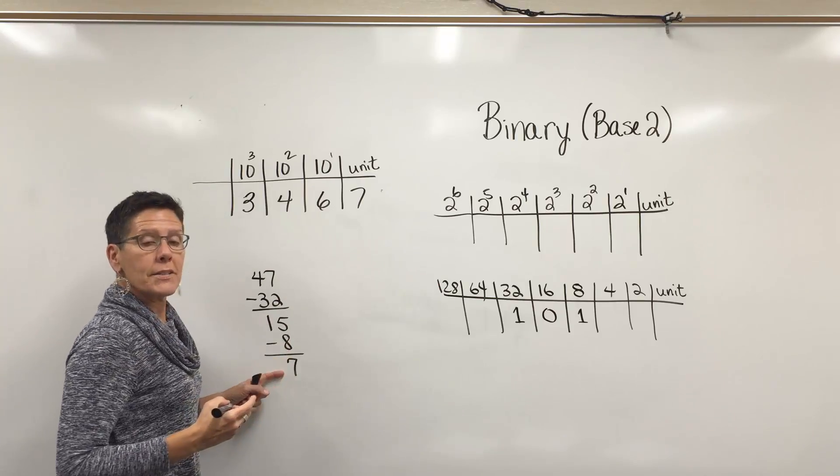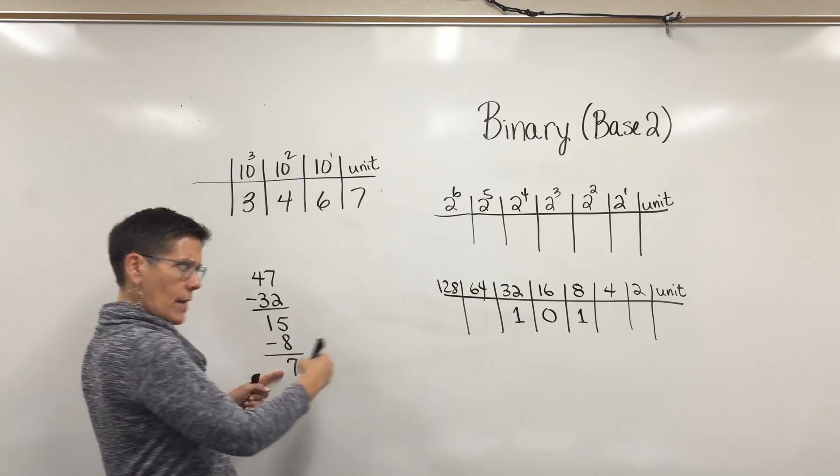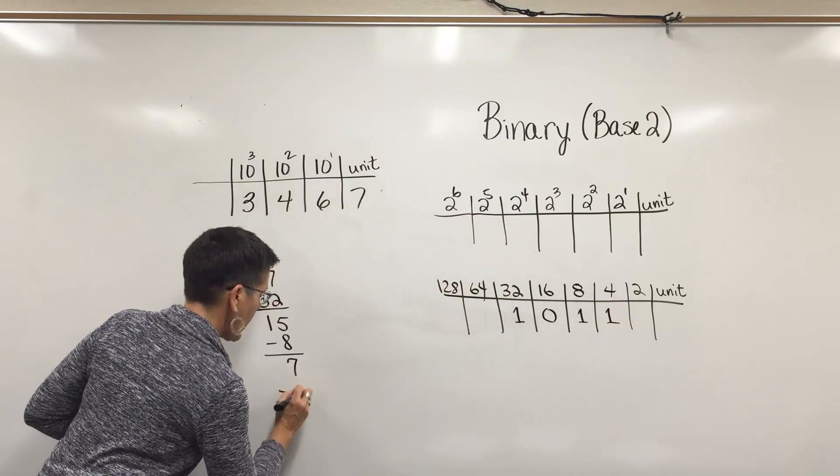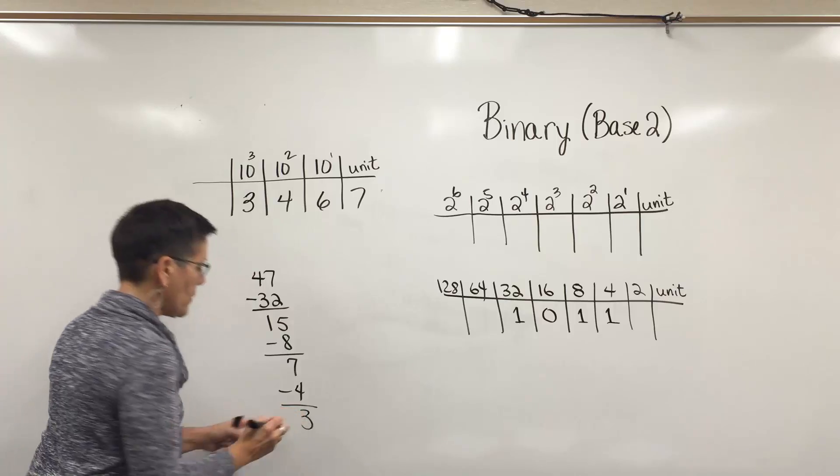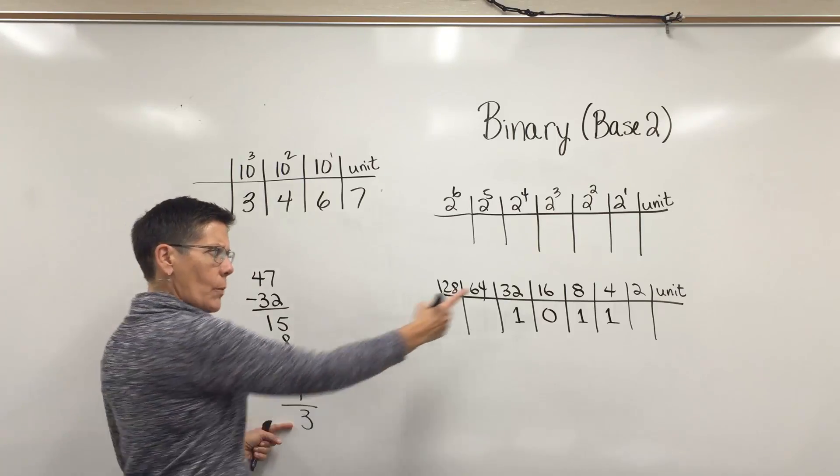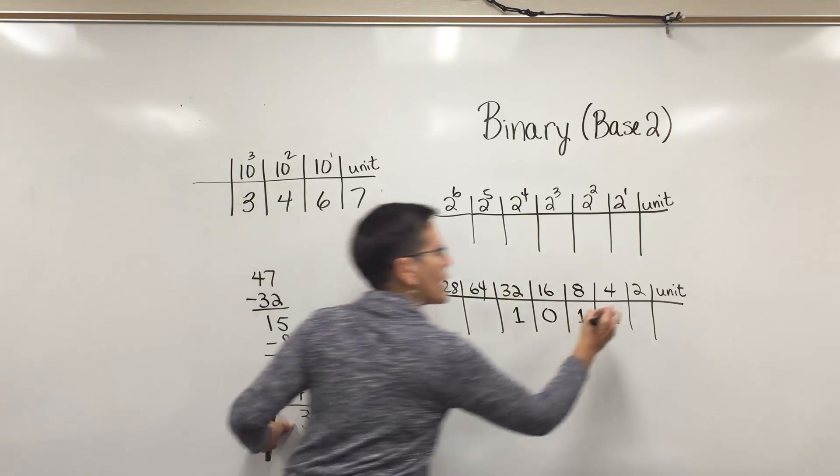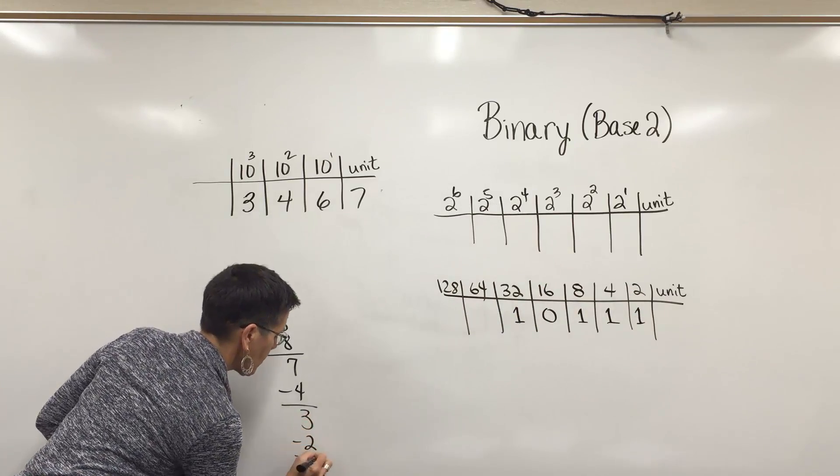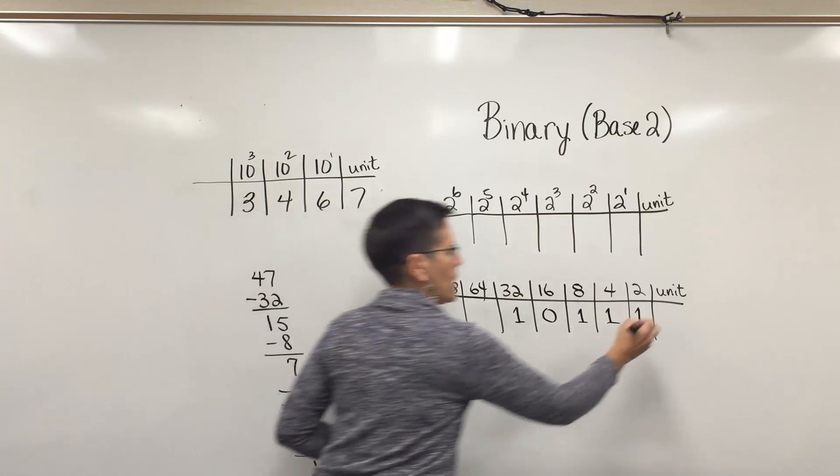But I can get an eight out of the number 15, and when I subtract that, I have seven left over. Can I get four out of seven? Sure, I can. I can get one four out of seven. When I subtract that, I have the number three. Can I get a two out of three? Sure, I can get one two out of the number three, and I'm left with one unit.